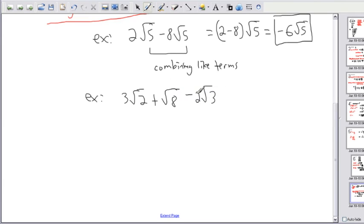You'd think, well right away, I can't do anything. I can't combine square root of 2. I can't combine square root of 8 or square root of 3 because they're all different square roots.